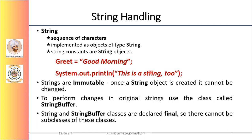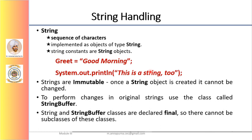The second thing to understand about strings is that objects of type string are immutable. Once a string object is created, its content cannot be altered. When we create a string object, we are creating a string that cannot be changed — once a string object has been created, we cannot change the characters that comprise that string. Even though this seems as a serious restriction, it is not so. We can still perform all types of string operations.